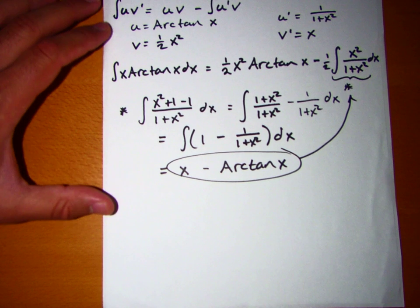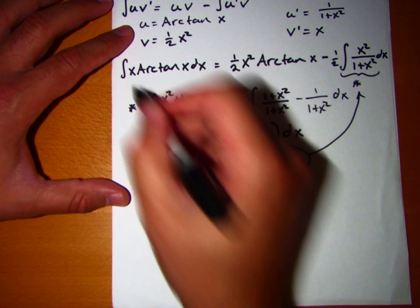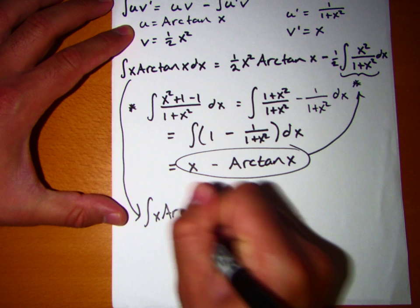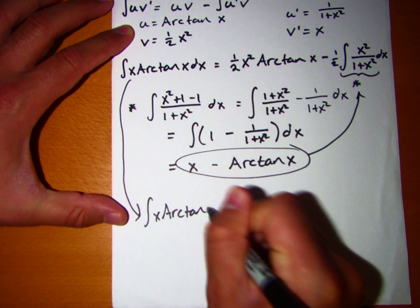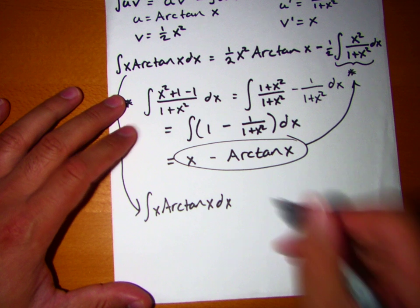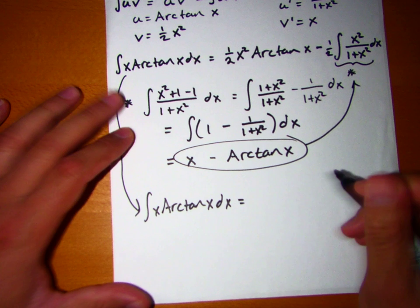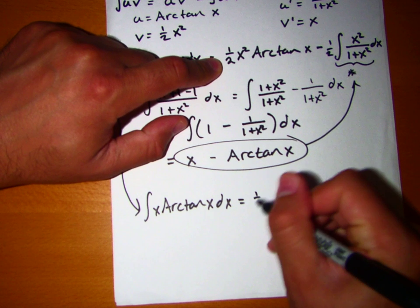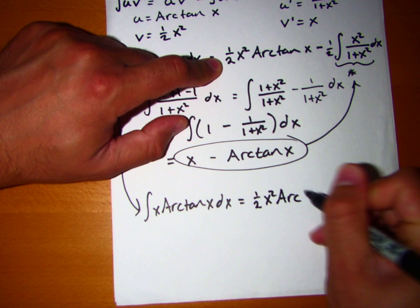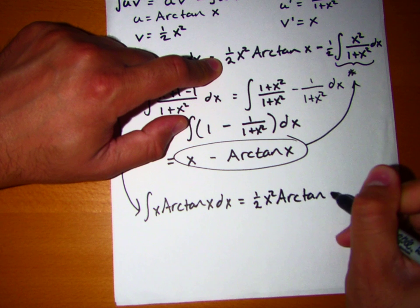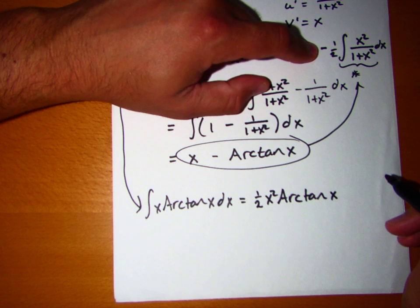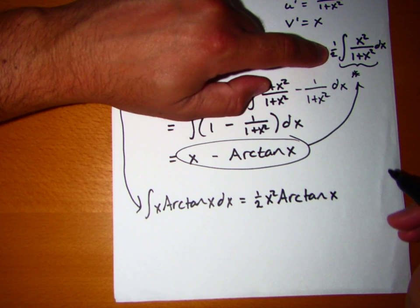So if we go back to what we had, the integral of x arctangent x is going to be equal to 1 half x squared arctangent x minus 1 half.